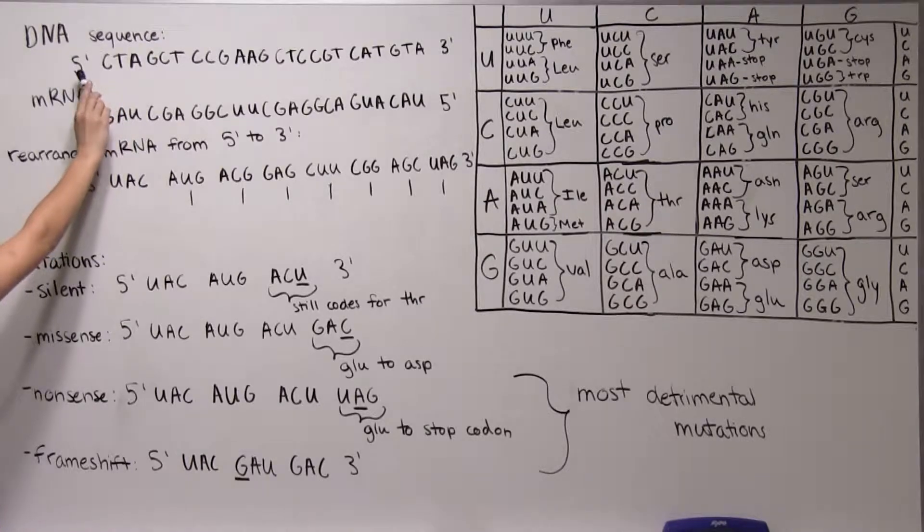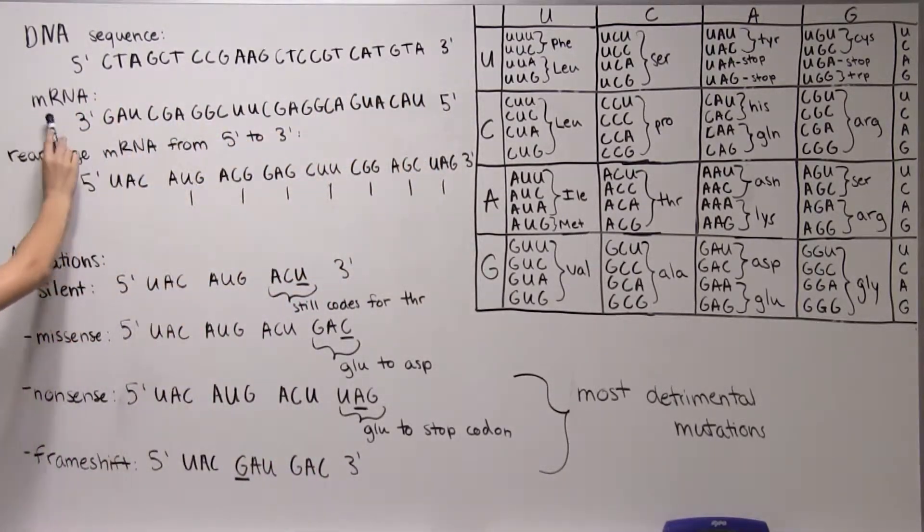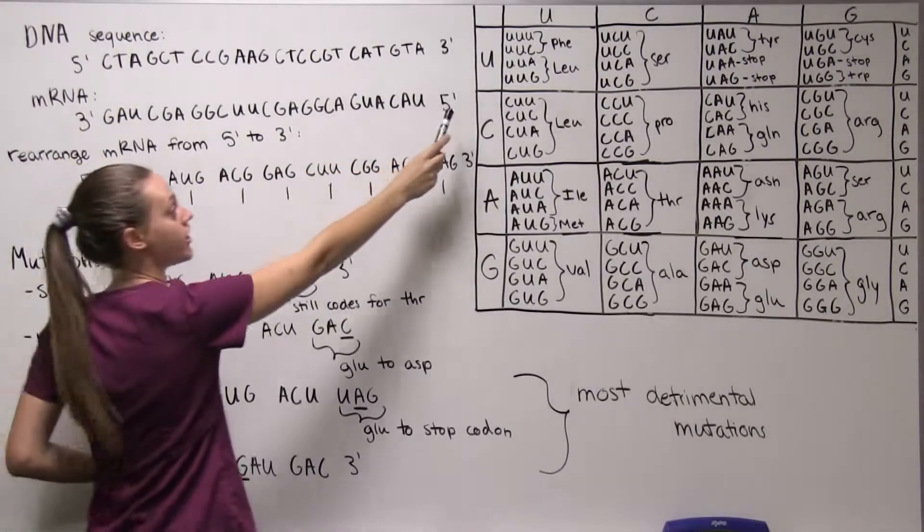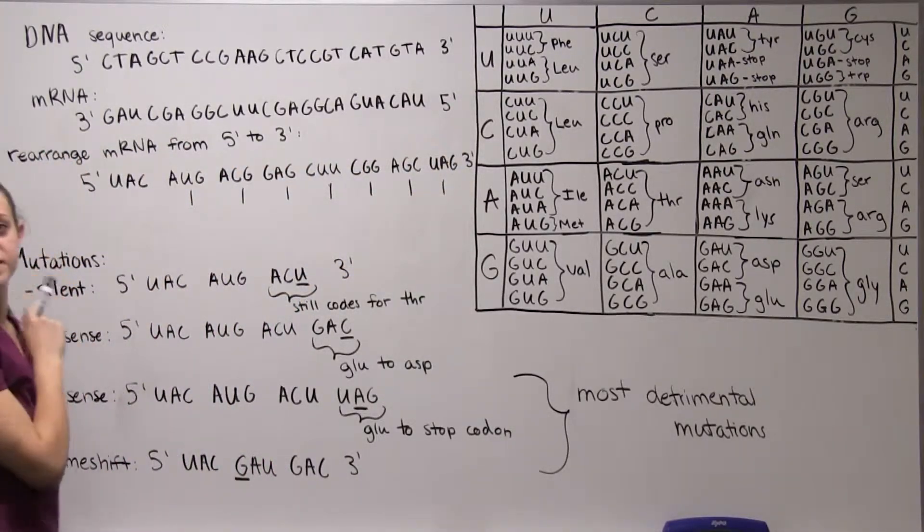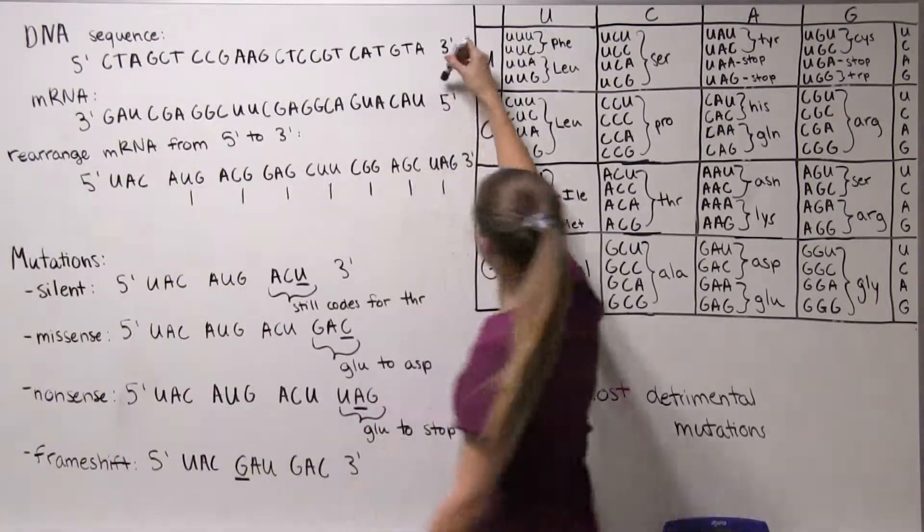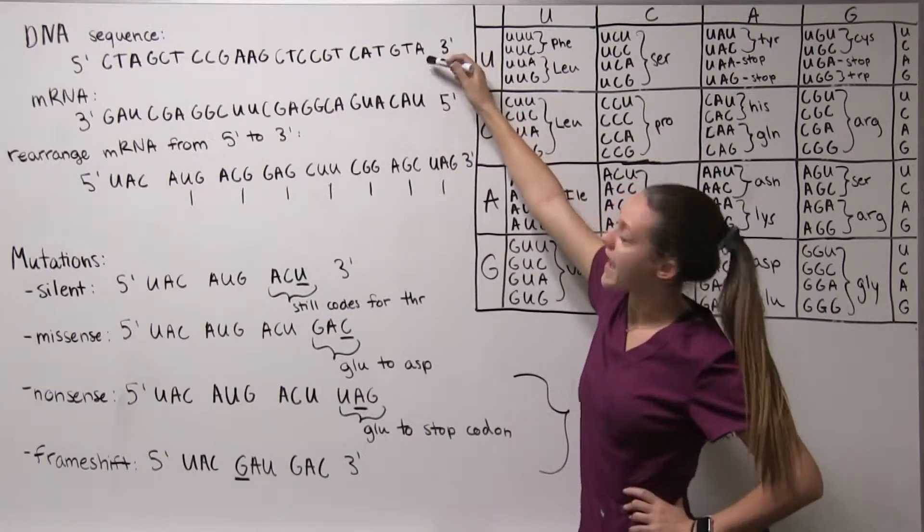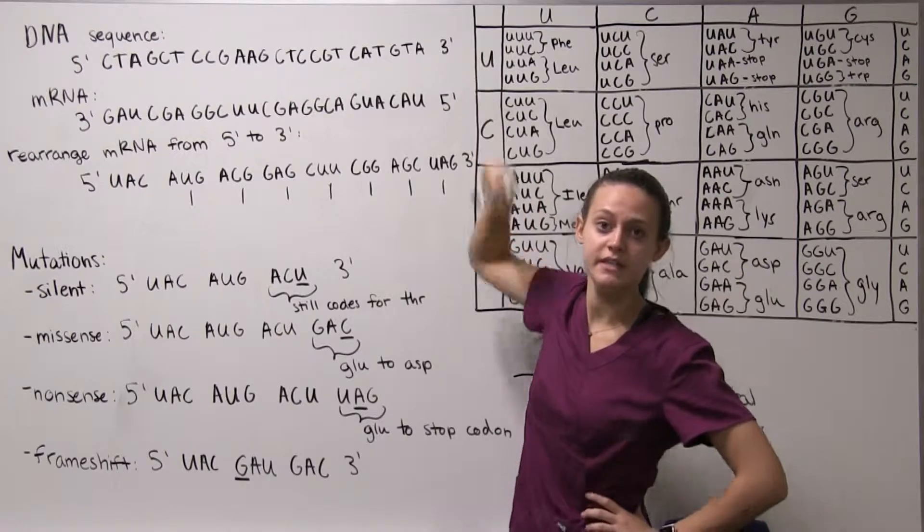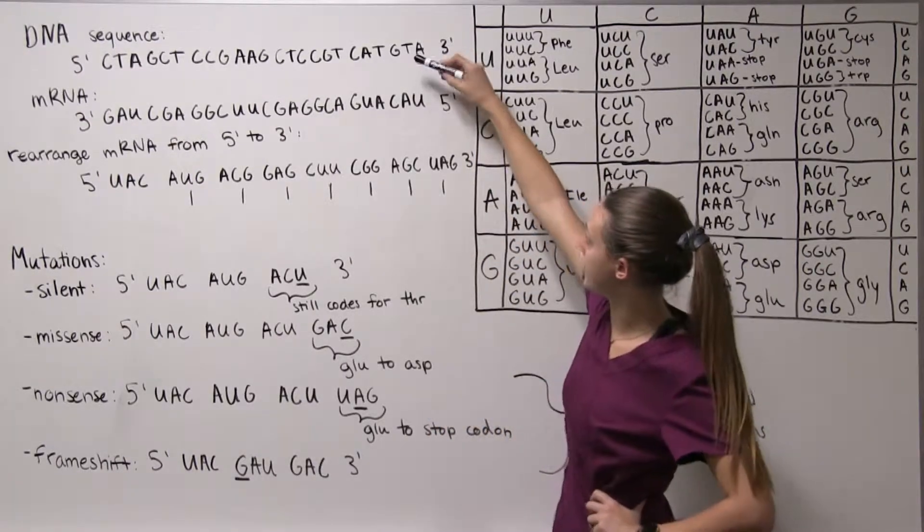So we have a DNA sequence here from five prime to three prime and for mRNA our five prime is here and our three prime is here because these strands run anti-parallel. Starting over here at five prime for our mRNA, for A our base pair is going to be U instead of the T that is in DNA and we continue on this way.